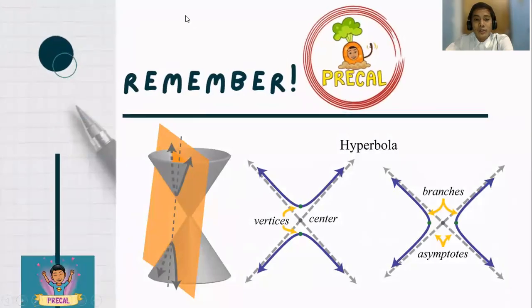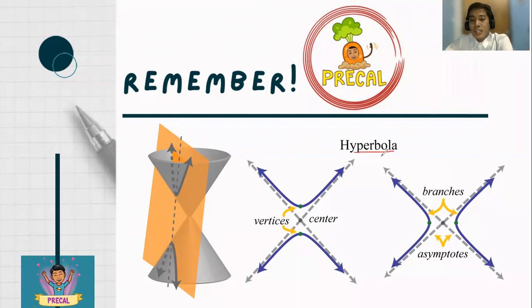Based on Apollonius of Perga's discovery, the cutting of the plane intersects the double right circular cone at two generators — both on the upper and lower part. Hyperbolas have two branches, and these branches are not parabolas. The curves may open to the right or left, or upward or downward. Always remember that hyperbolas have two intersecting asymptotes.